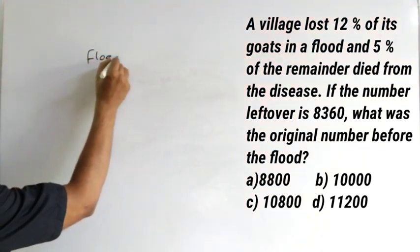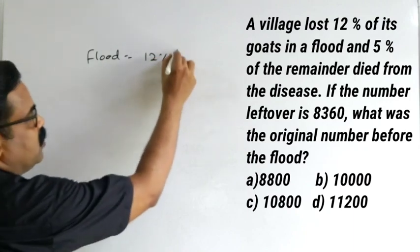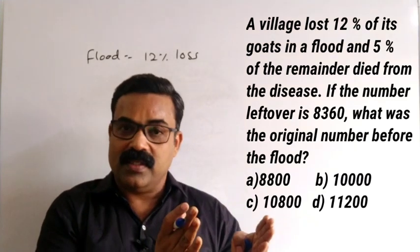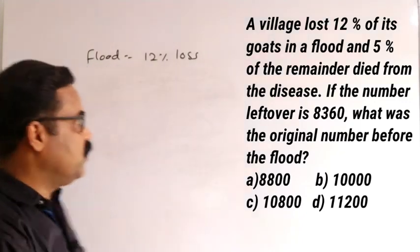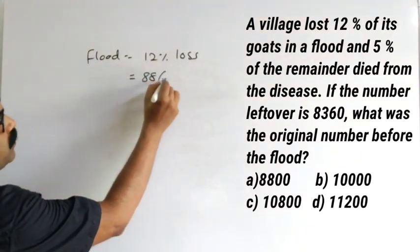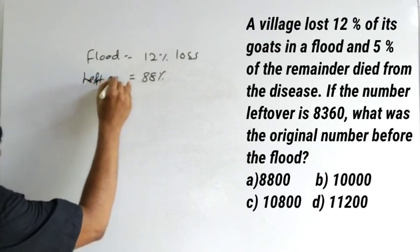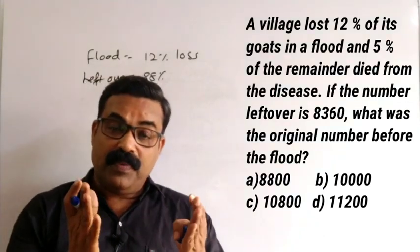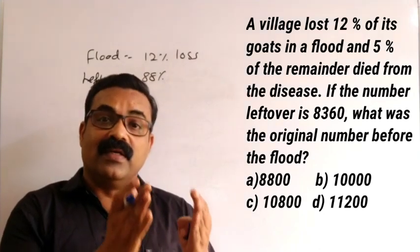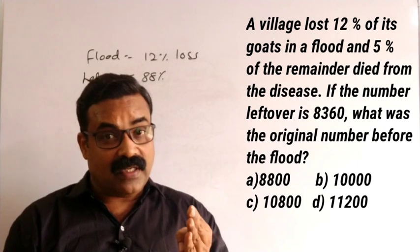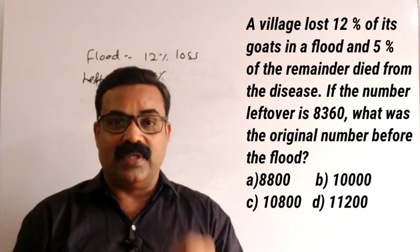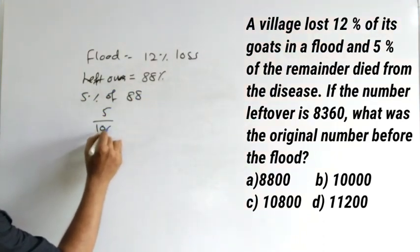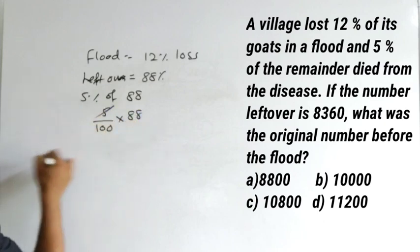Due to flood, 12 percentage loss. So when 12 percentage is lost, what is left out? 88 percentage is left over. Now again, it is given that five percentage of the remaining died due to disease. That means five percentage of 88 is died due to disease. What is five percentage of 88?